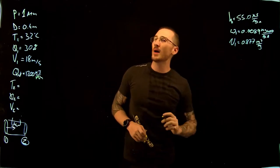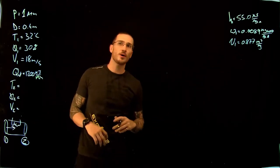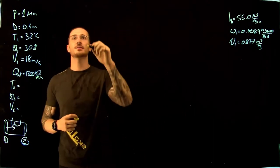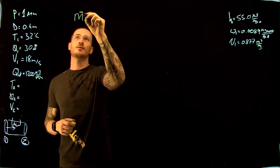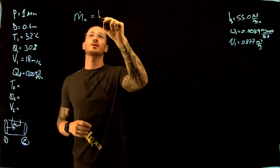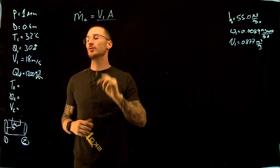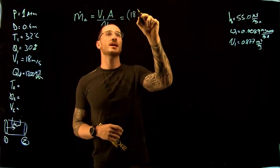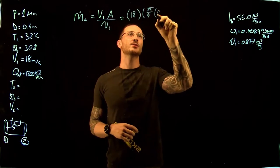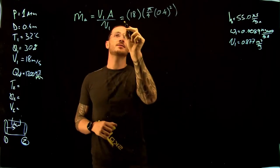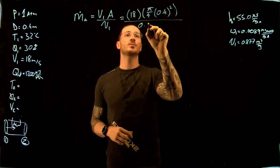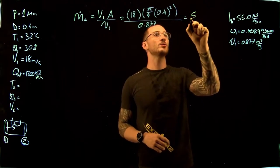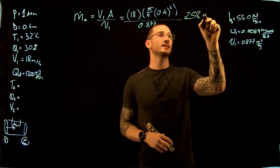With the specific volume at point 1, the velocity, and the cross-sectional area at point 1, we can find the mass flow rate, which equals the mass flow rate at point 2. The mass flow rate equals velocity at point 1 times the cross-sectional area divided by the specific volume at point 1. This gives us 18 m/s × (π/4 × 0.4²) / 0.877 m³/kg, which yields a mass flow rate of 2.58 kg/s.